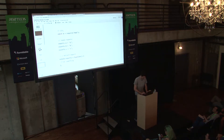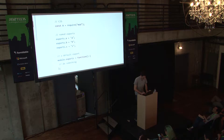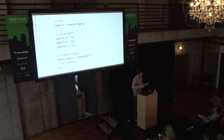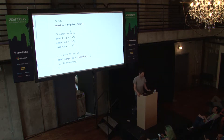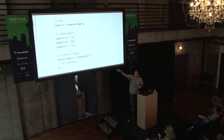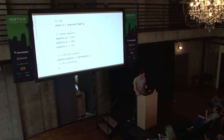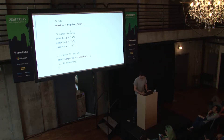Here's CommonJS. You have a require call for a module. You can assign it to a variable. If you want to export something, you have a free variable called exports that you can bolt properties onto and assign values to. And then you have module.exports. You can assign module.exports a function, and whenever you require a module, that will be the function returned from the require call.